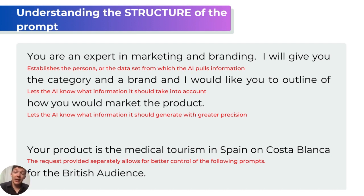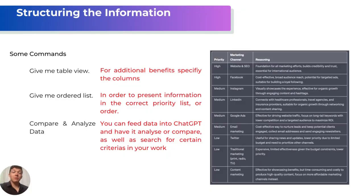It gives a pretty good marketing start draft. How can we improve it? We need to structure the information. Here are some commands you can use: 'give me the table view' — as you can see, it gave me a table view of the marketing channels. I asked for an ordered list, and it ranked them from high to medium to low with reasoning. It still thinks website and SEO are the most important ones — let me know in the comments how important you think websites and SEO are today.